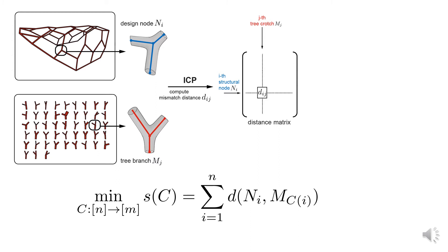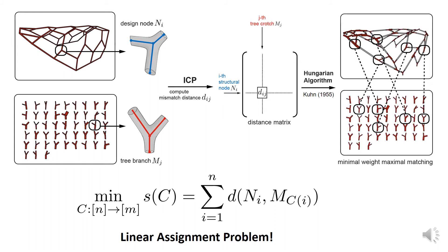Finally, we formulate our optimal matching problem as follows: we seek a one-to-one assignment from the set of design nodes to the set of tree forks in inventory such that the overall mismatching score is minimized. This is a particular instance of the linear assignment problem, a very classic and well-studied problem in combinatorial optimization literature. For this specific problem, we have a very efficient algorithm that can solve it in polynomial time. In this work, we use the Hungarian algorithm proposed by Kuhn in 1955, also known as the Munkres–Kuhn assignment algorithm, to solve the optimal matching problem very efficiently.